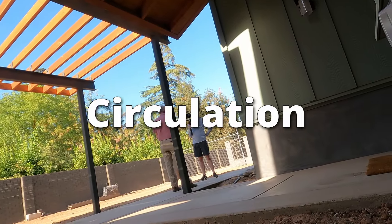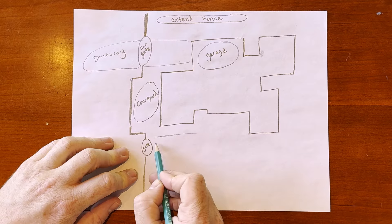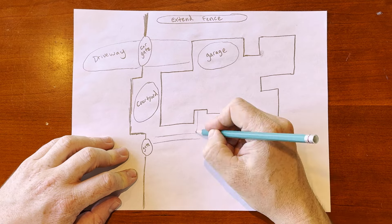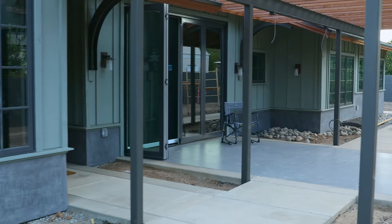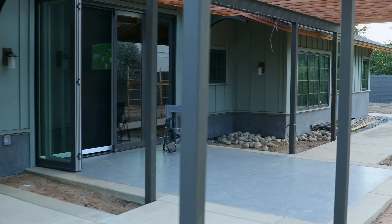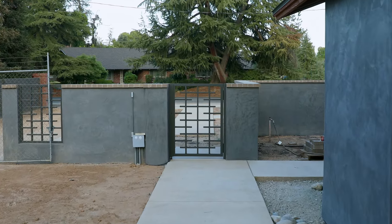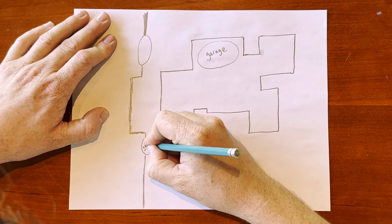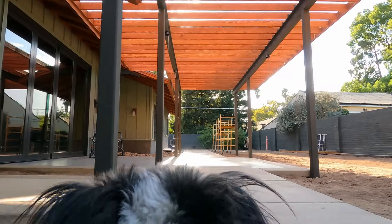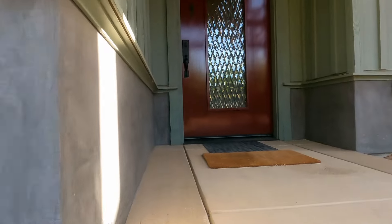Bubble diagrams include circulation, but instead of drawing the shape of the walks, you draw a bubble showing how you get from one space to another. Where we're standing is directly in line with the only pedestrian gate that leads to the front door, so you'd have a bubble around the pedestrian entrance and a bubble around the walk that leads us to the front door.